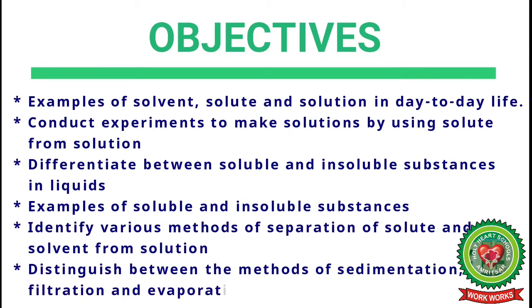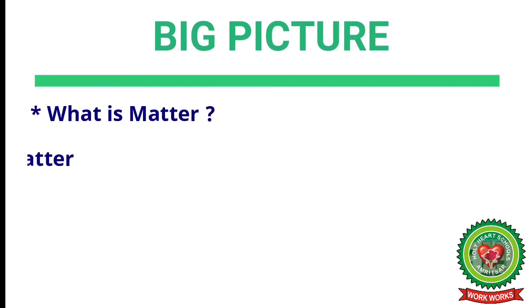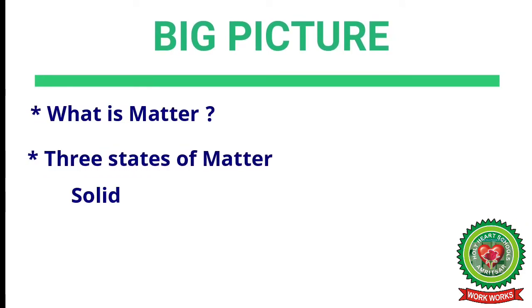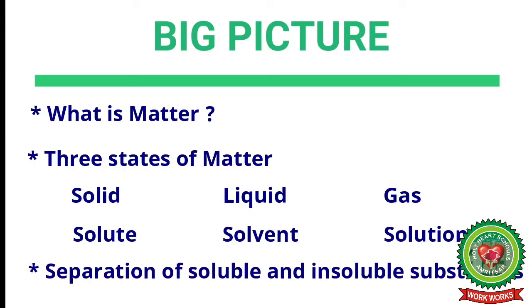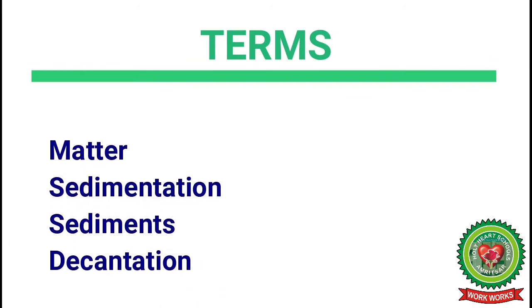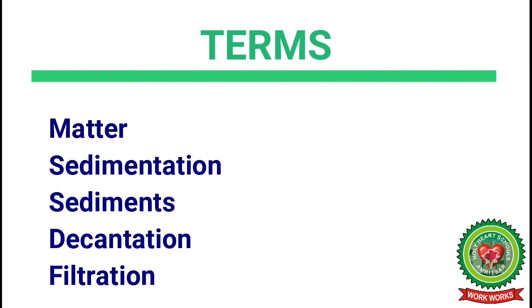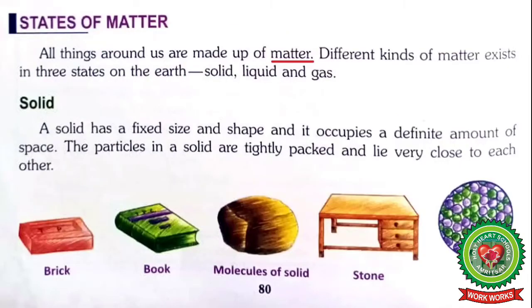In this chapter we will also study: what is matter, the three states of matter — solid, liquid, and gas — solute, solvent, and solution, and separation of soluble and insoluble substances. Key terms include matter, sedimentation, sediments, decantation, filtration, solute, solubility, solution, solvent, and volume. Now open your book at page number 80.